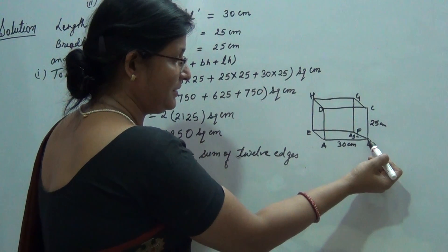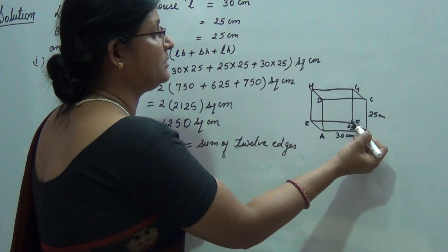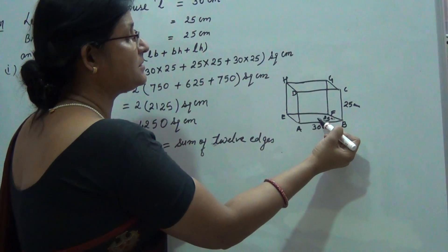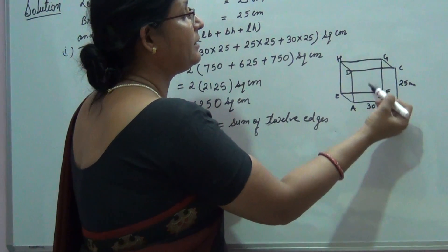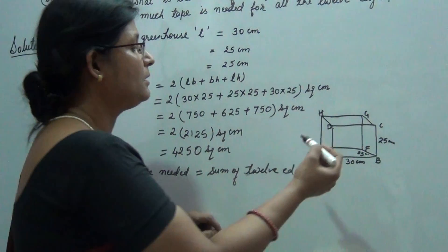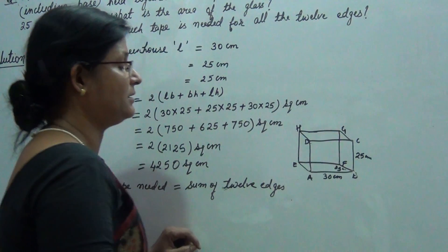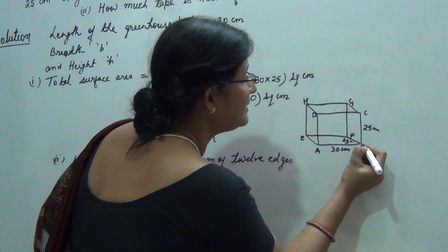AB is 30 centimeter, so at the same time EF is also 30 centimeter because the base is rectangular in shape. And the opposite face, that is DCGH, is also rectangular. In this also DC is 30 and HG is also 30. So in this way we see that each dimension, that is length, is 4 times.